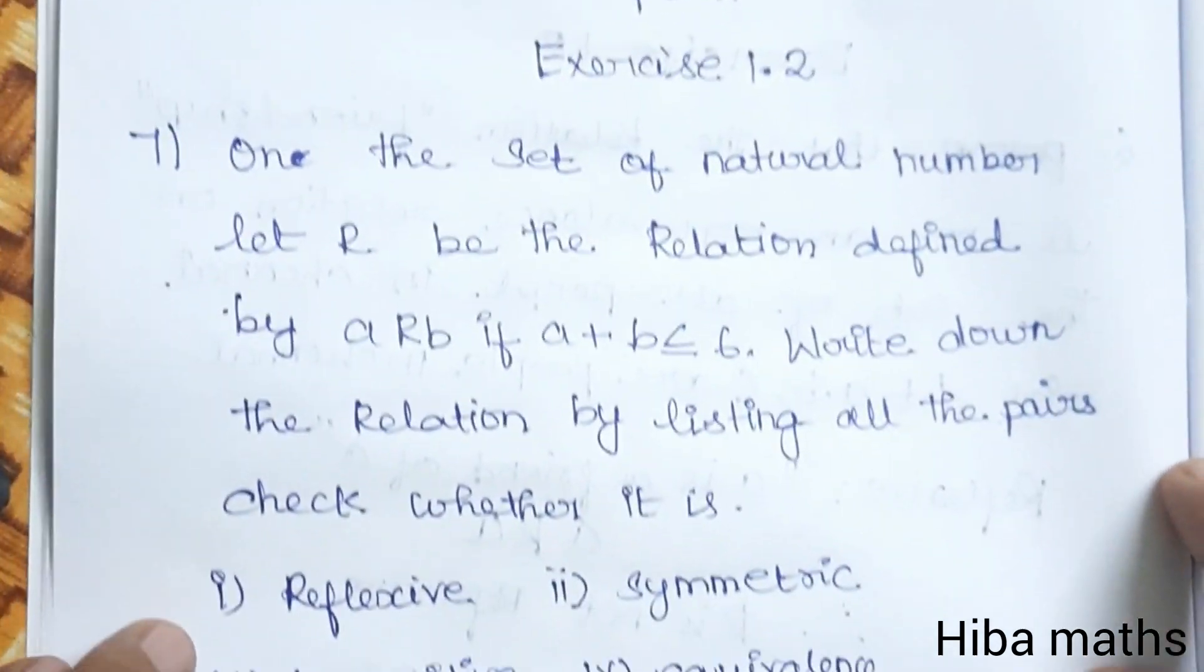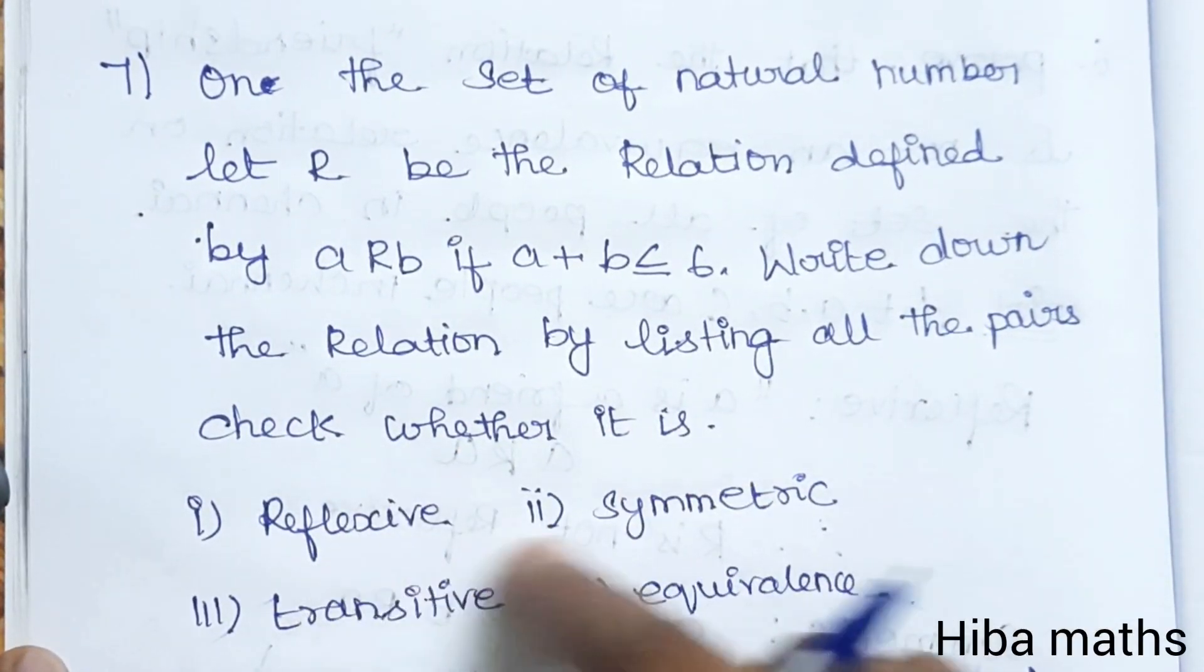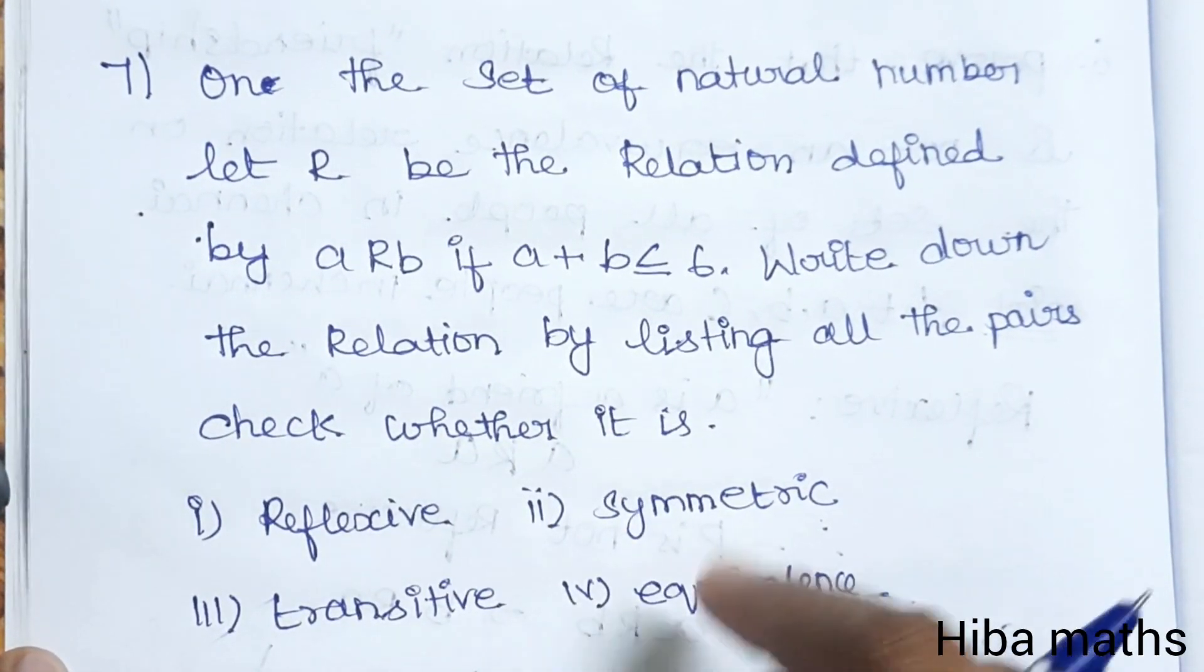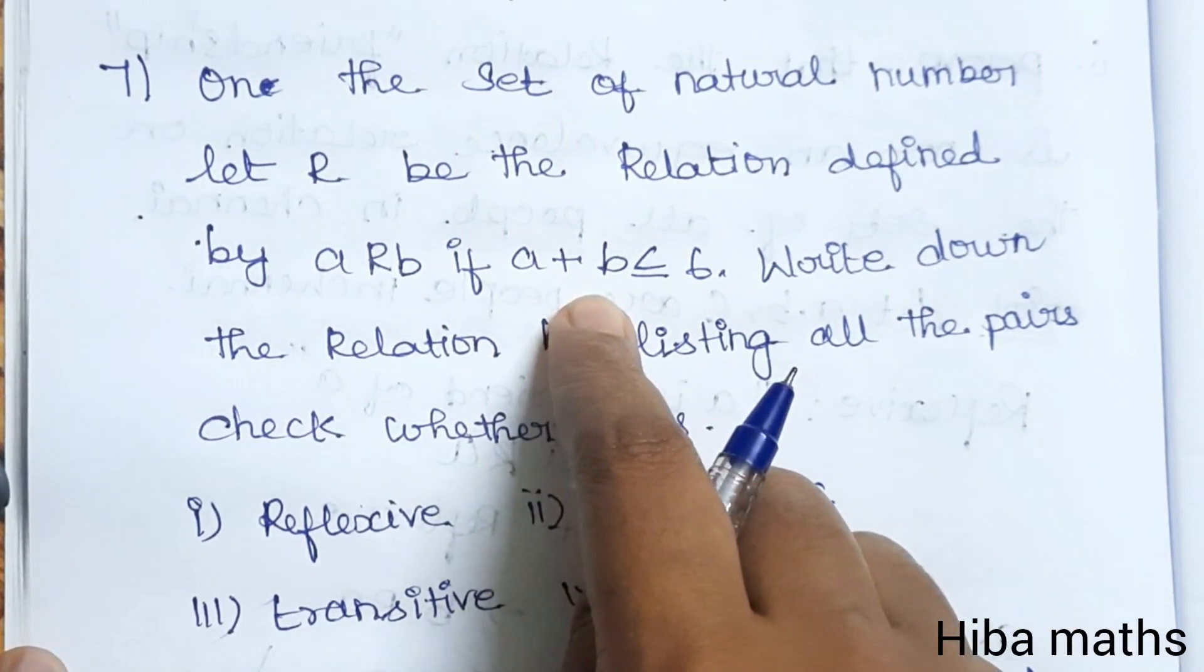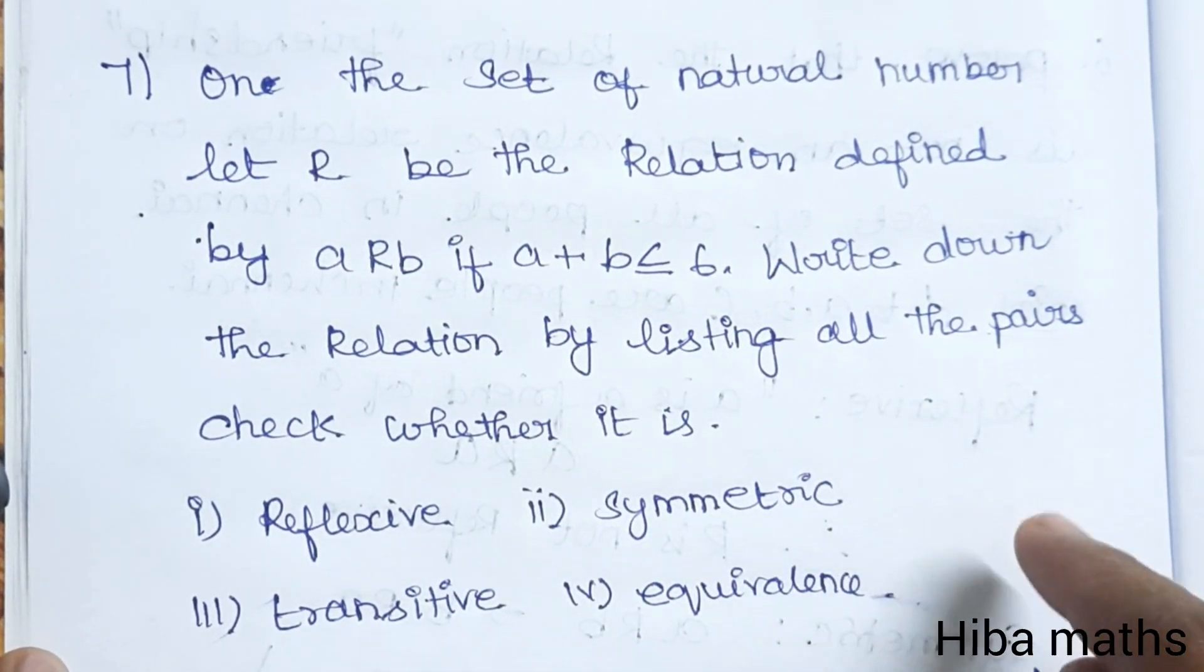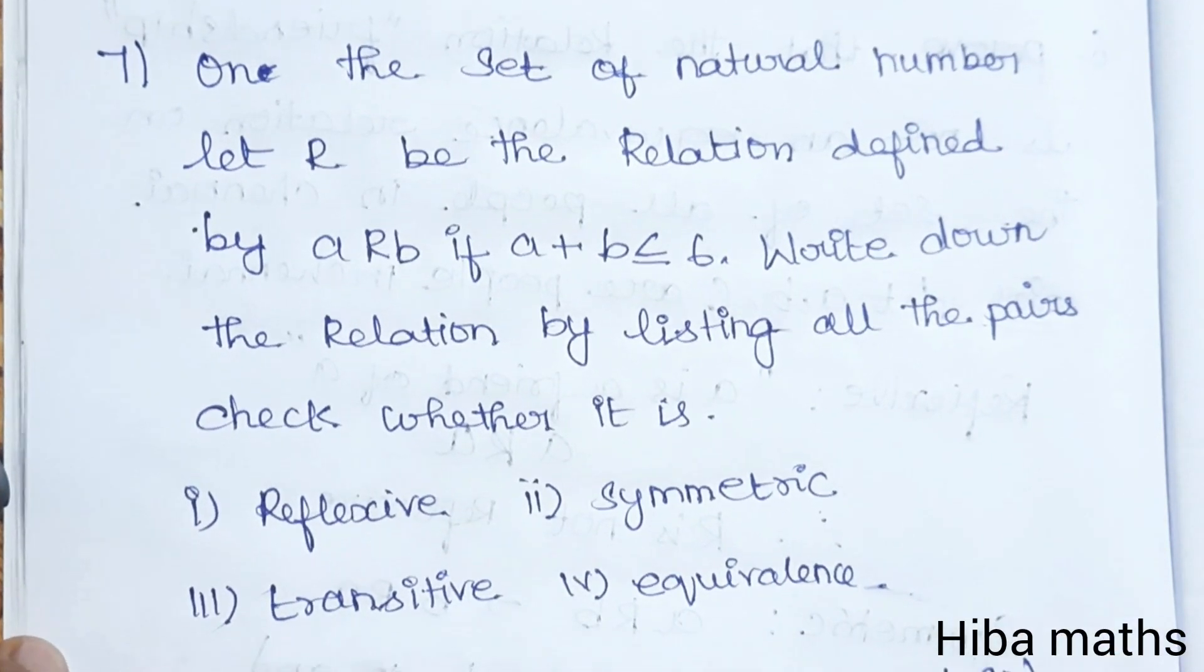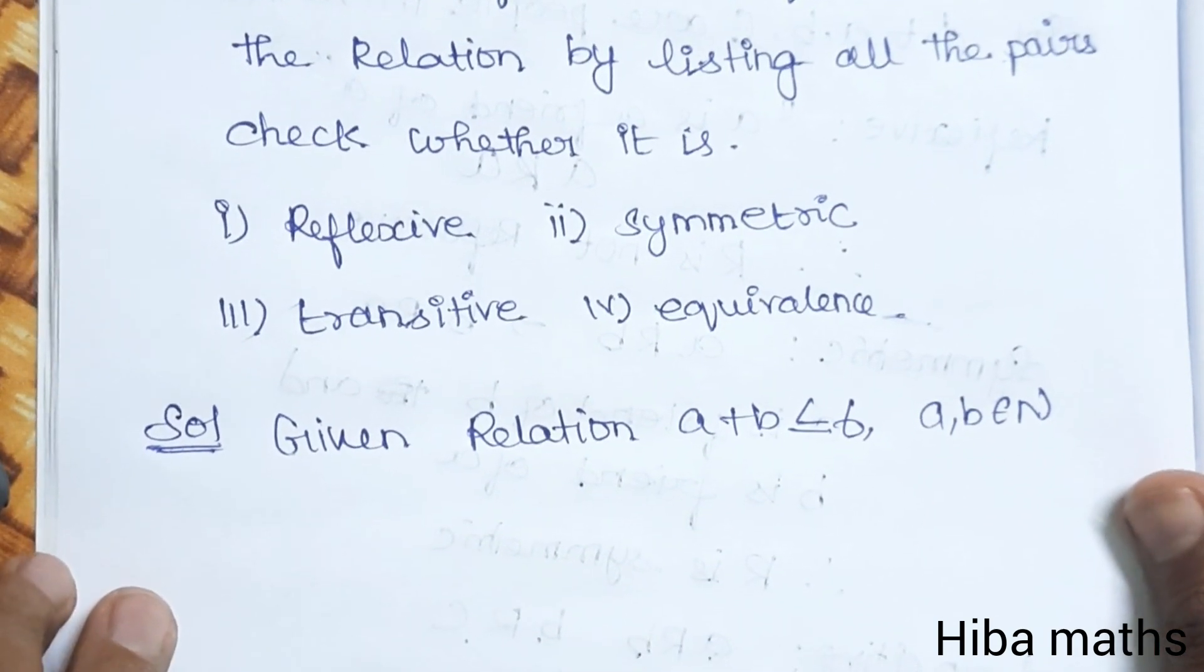Write down the relation by listing all the pairs and check whether it is Reflexive, Symmetric, Transitive, and Equivalence. We need to find the ordered pairs and check if the given relation satisfies these properties.